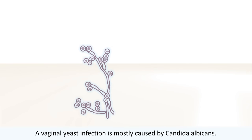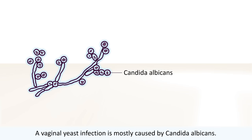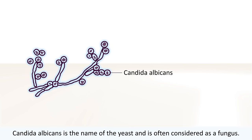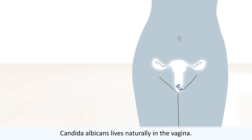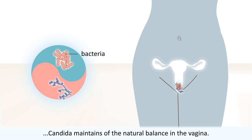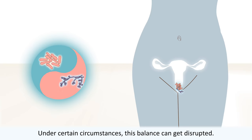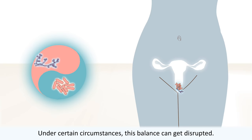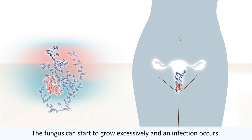A vaginal yeast infection is mostly caused by Candida albicans. Candida albicans is the name of the yeast and is often considered a fungus. Candida albicans lives naturally in the vagina together with bacteria, and maintains the natural balance in the vagina.